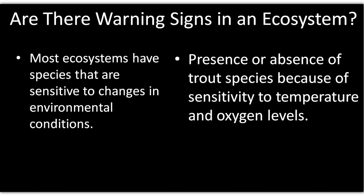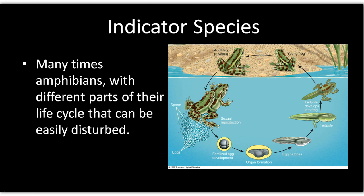Indicator species serve as warning signs in an ecosystem — they show changes in the environment, usually early on. In aquatic systems especially, changes in temperature or oxygen levels can be detected this way. Amphibians are a key example because their multi-stage life cycle can be disrupted by changes in temperature, pH, and oxygen. Here we see frogs going through their life cycles — from eggs to tadpoles to adults — and any of these changes can be observed quickly with amphibians.